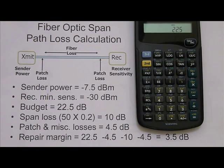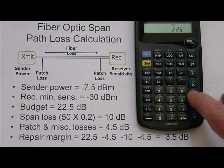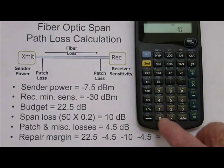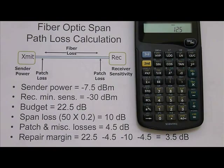We have a 50 kilometer span and a loss in that span of 0.2 dB per kilometer. Multiplying those two together we get 10 dB, and we can subtract that 10 dB from our budget leaving 12.5.